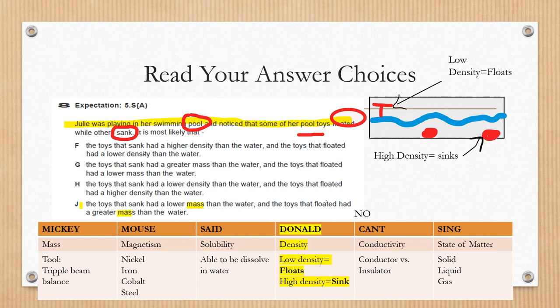Now I'm gonna read the answer choices. Letter J says the toys that sank had a lower mass in the water and the toys that floated had a greater mass in the water. No. According to my chart, I know that this property is density, not mass, so it could not be letter J. Letter H says the toys that sank had a lower density than the water and the toys that floated had a higher density than water. No, according to my chart and my drawing, the objects that are floating have lower density, not higher density.